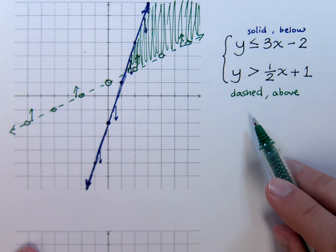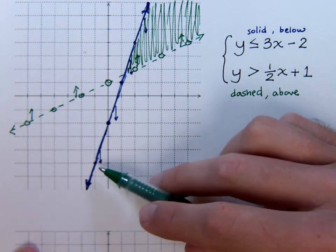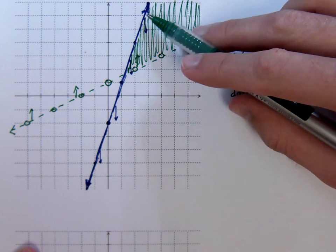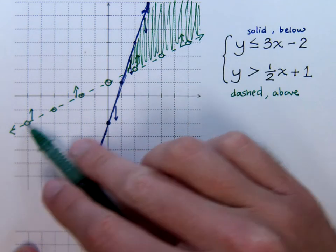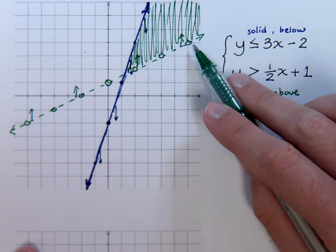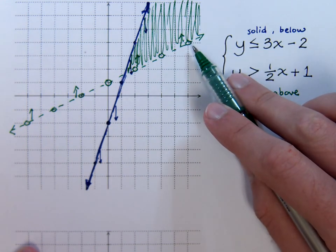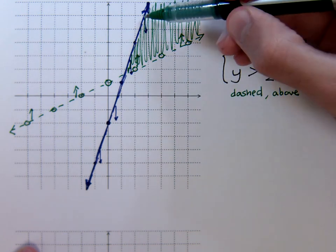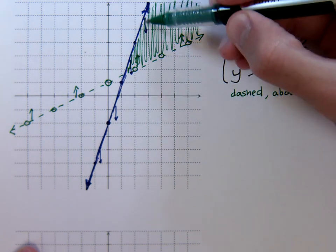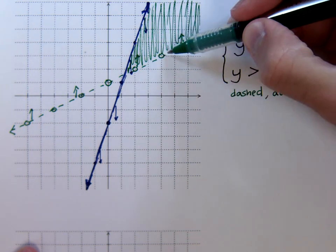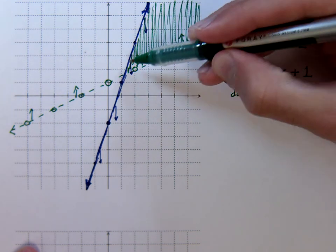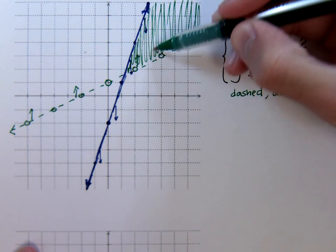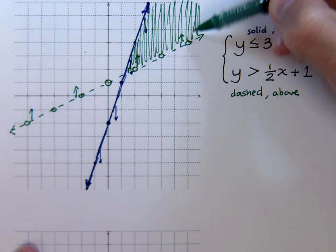And there you have it. We graph each line individually and look at where the shading is supposed to be. The shading for the blue line was below, the green line was above, and they matched up in this overlapping region — that is the solution to the system of inequalities.